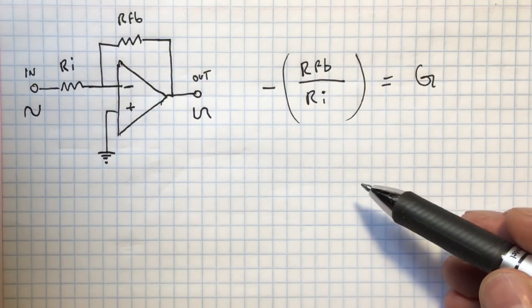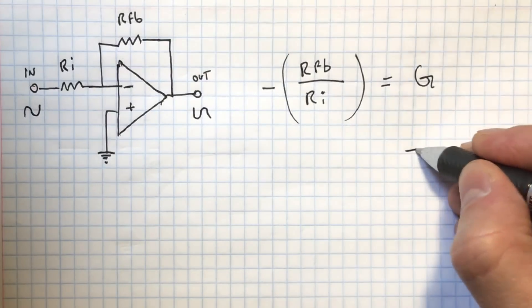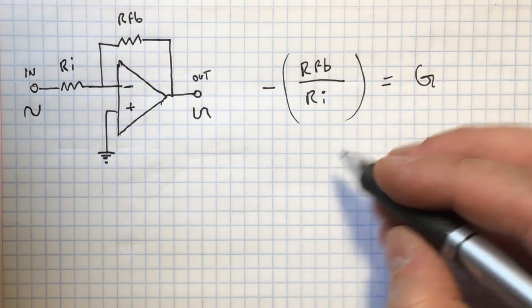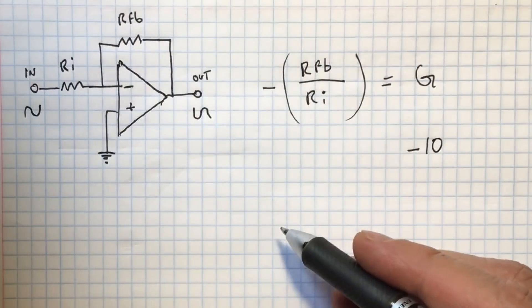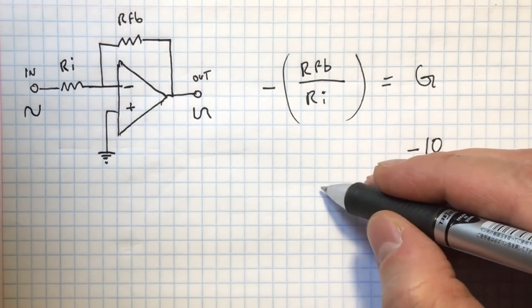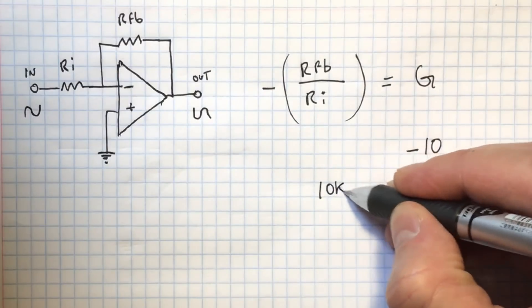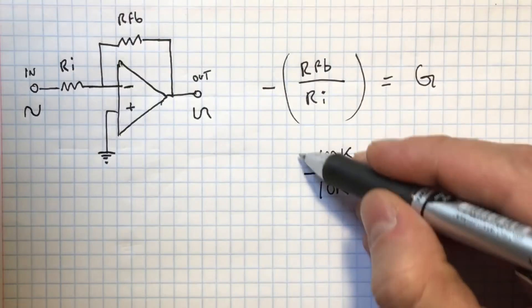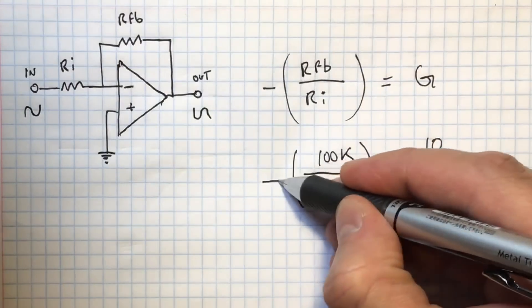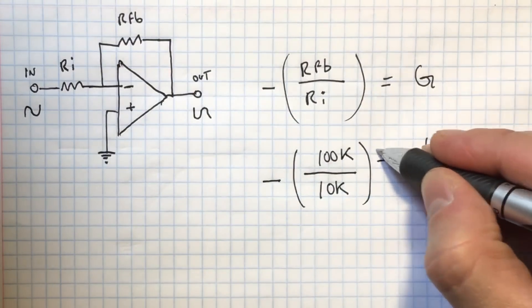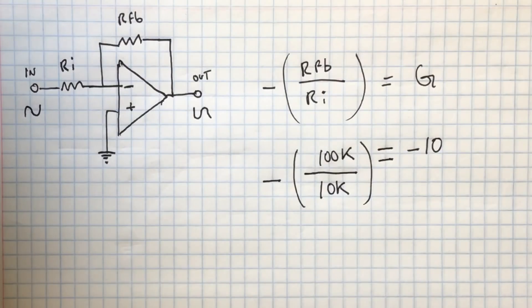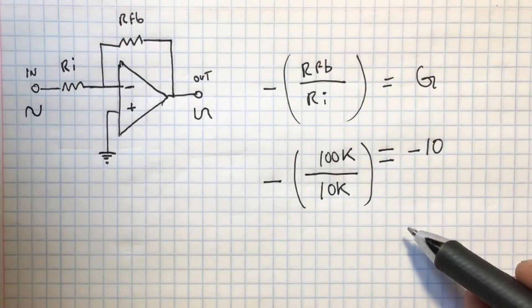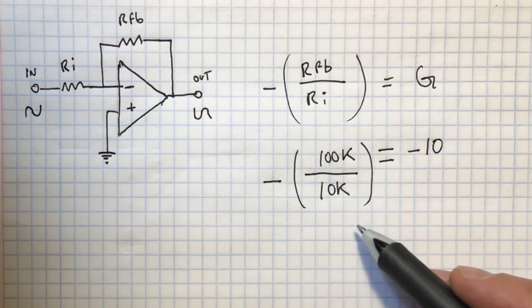So for example, let's say you want a gain of minus 10, right? So if you put one volt here, you will get minus 10 volts at the output. The way you would do that is you can choose 10K for the input resistor and 100K for the feedback resistor, right? And that's going to be multiplied by minus one and that's going to be equal to minus 10. So now you have a gain of minus 10 if you use these values for feedback and input resistor.